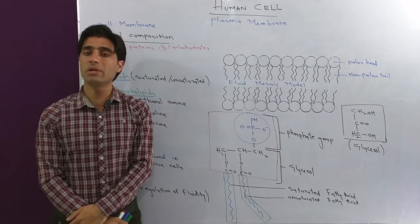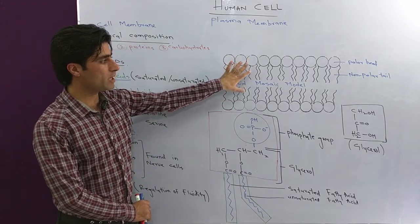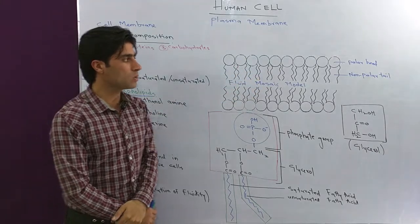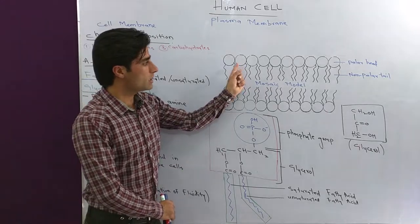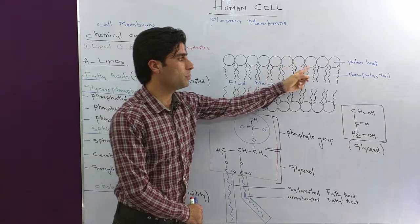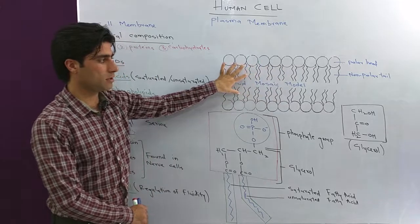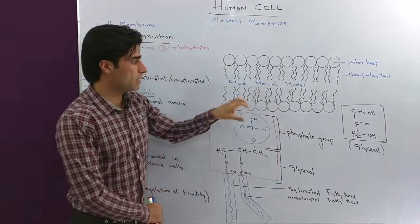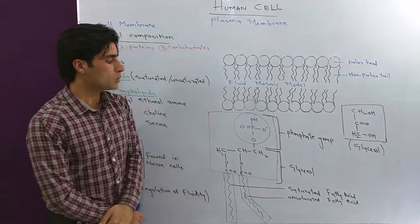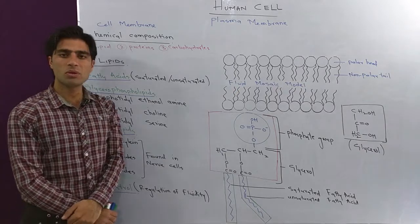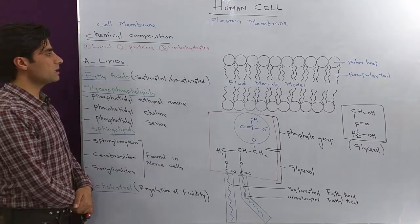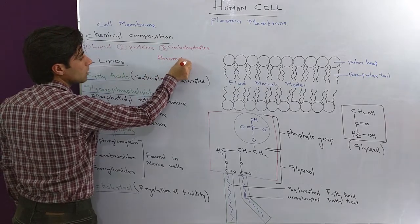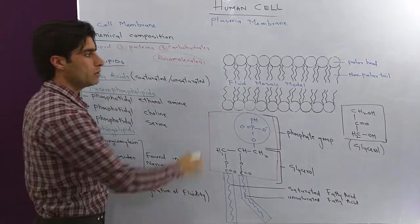These plasma membranes are made up of lipids, proteins, and carbohydrates. If you look at the structure of the plasma membrane, it is a lipid bilayer. I have explained the structure extensively in my previous video. These are the phospholipids with polar heads and nonpolar tails, and there is another layer of phospholipids upside down.